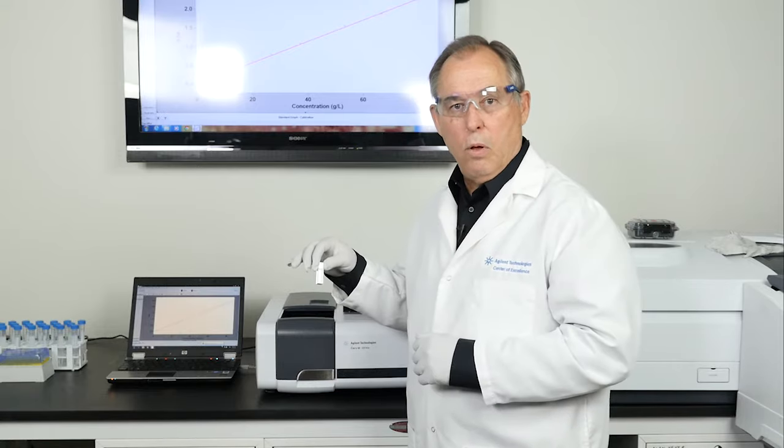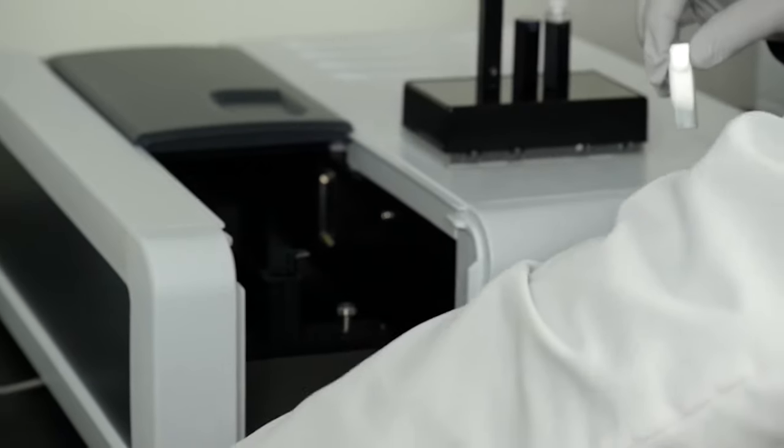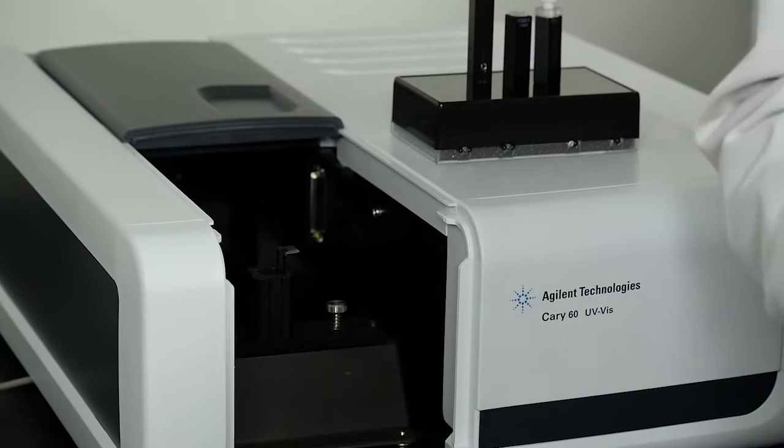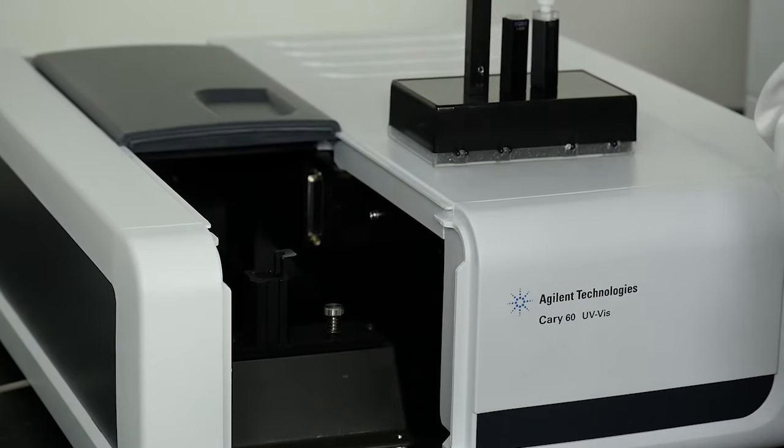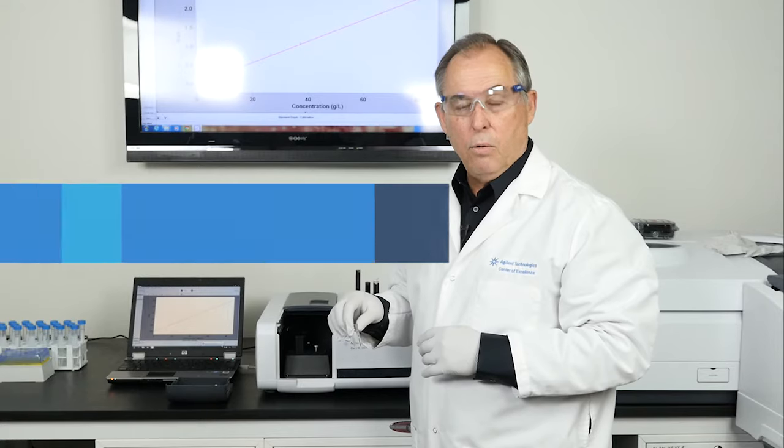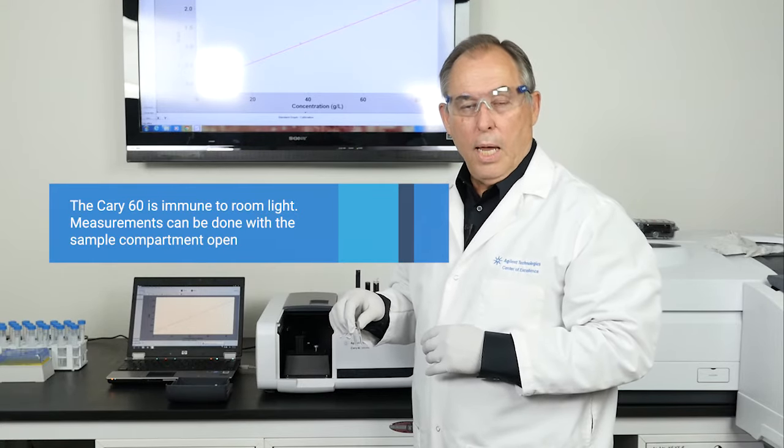So first I can take off the sample compartment lid because the Cary 60 can measure with the sample compartment lid off. It has a technique or a feature called room light immunity.